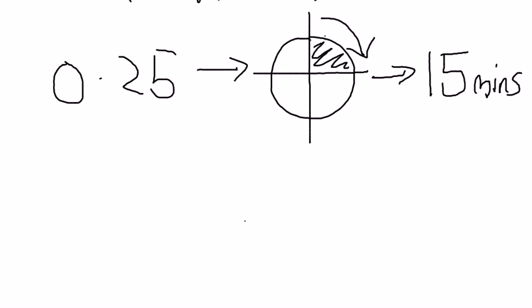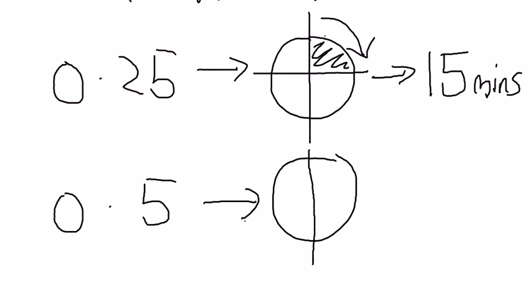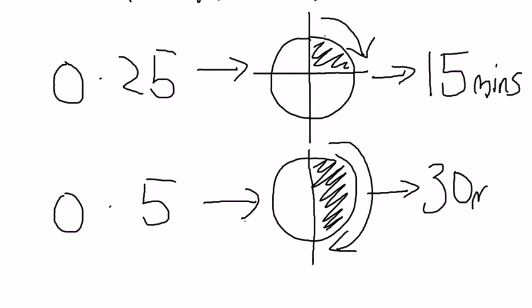Next, we have 0.5 hours. Same thing if you draw a clock and you split it. Now, 0.5 is actually half, which is one over two. So half, let's cut this clock into half. And then, you will see that this clock, which you go this way, is actually 30 minutes.